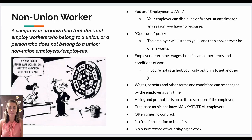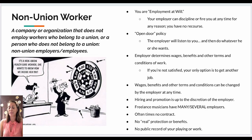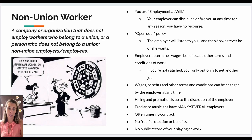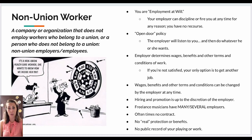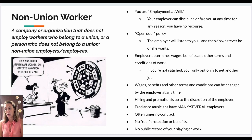The employer determines wages, benefits, and other terms and conditions of work. If you're not satisfied with your job, it's really your only option to get another job. Wages, benefits, and other terms and conditions can be changed at any time by the employer. Hiring and promotion is up to the discretion of the employer — employees don't really get a say. Freelance musicians have many and several employers, so you can only imagine at the end of the year how tax season goes. Oftentimes there's no contract given to protect the musicians — no real protection or benefits.